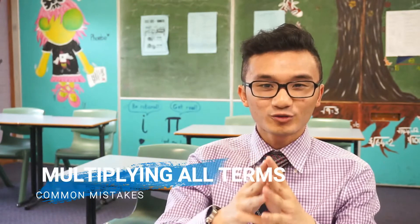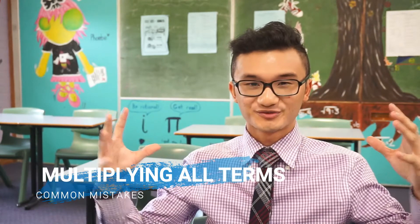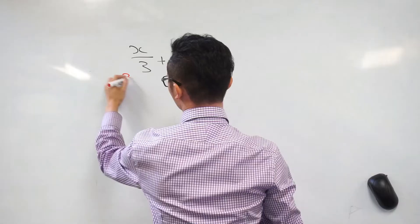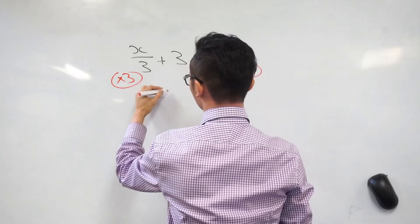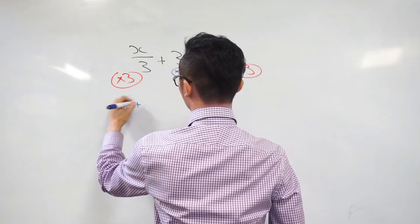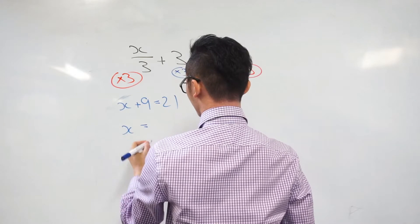What about some common mistakes? It's really important to know what to do, but it can also be helpful to think about what not to do. Here's the first one: when multiplying to remove fractions, students forget to multiply all the terms. For example, if I've got x divided by 3 plus 3 equals 7, the goal is to get x by itself. Students will see that fraction and say the opposite of division is multiplication, so let's multiply both sides by 3 — but they forget they have to multiply every single term on each side by 3. This can be fixed by remembering that multiplying both sides by 3 applies to every term, or by gathering all like terms first, which makes the error less likely.